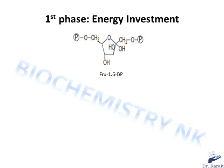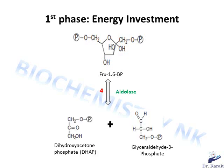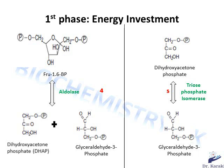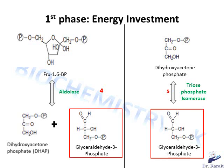In step number 4, aldolase splits fructose 1,6-bisphosphate into two sugars that are isomers of each other. These two trioses are dihydroxyacetone phosphate and glyceraldehyde 3-phosphate. This reaction is reversible. Because glyceraldehyde 3-phosphate is the only molecule that continues the glycolytic pathway, all the dihydroxyacetone phosphate molecules produced are further acted on by the enzyme triose phosphate isomerase, which reorganizes dihydroxyacetone phosphate into glyceraldehyde 3-phosphate so it can continue in glycolysis. At this point, we have two glyceraldehyde 3-phosphate molecules formed.